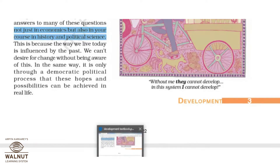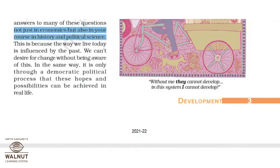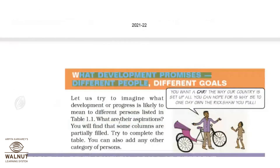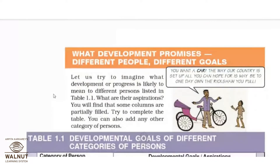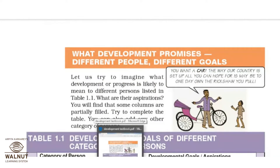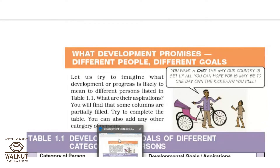What development promises is different to different people — it has different goals. For example, if the government wants to build a dam, an industrialist may feel it is good: they can save water, produce hydroelectricity, grow their industry, and earn more profit.